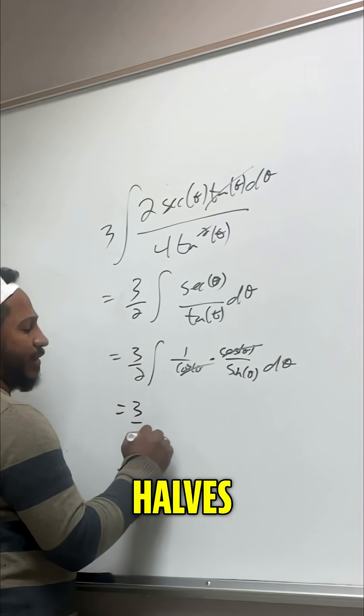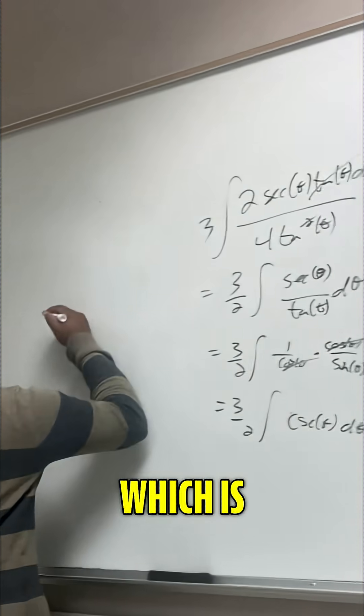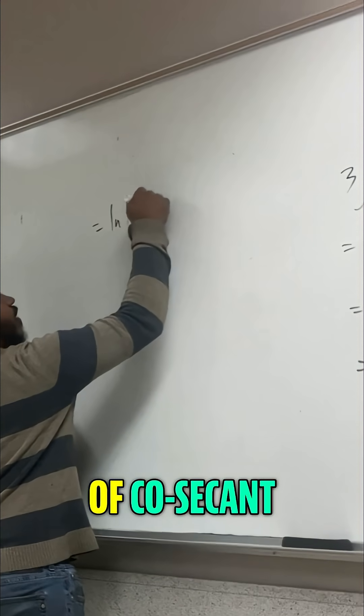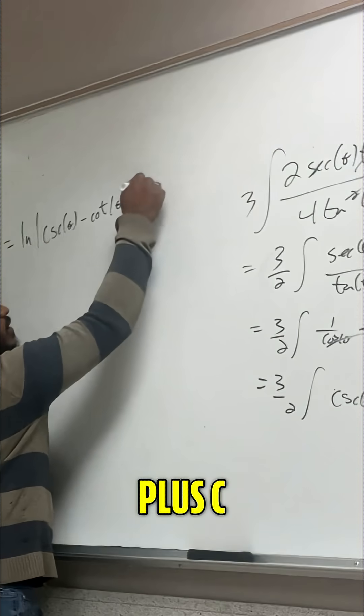And so this is 3 halves times the integral of cosecant, which is ln of absolute value of cosecant of theta minus cotangent of theta plus c.